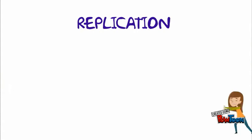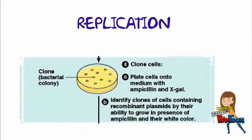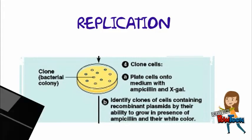The cells are cultured in a plate that contains medium with ampicillin and X-gal. Ampicillin acts as an antibiotic to prevent bacterial infection. We identify the clones of cells containing recombinant plasmid by their ability to grow in presence of ampicillin.